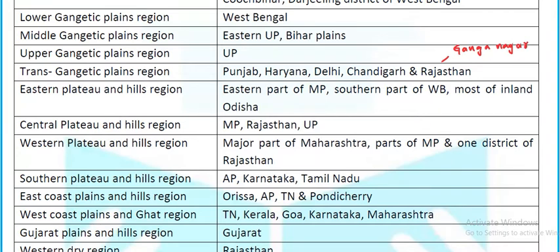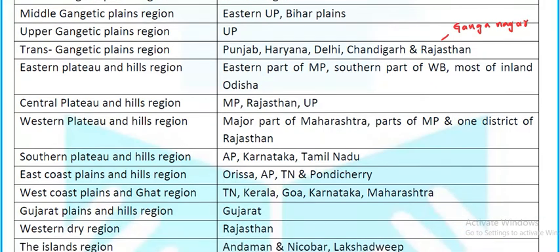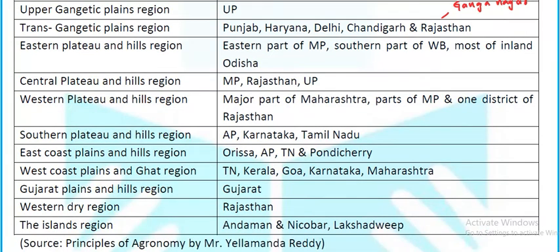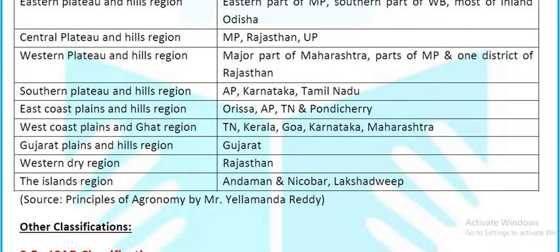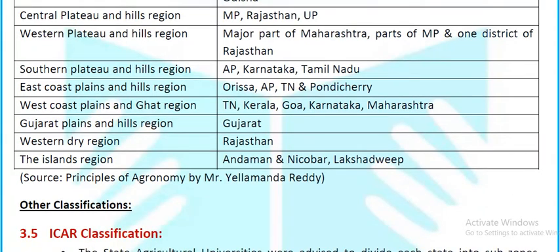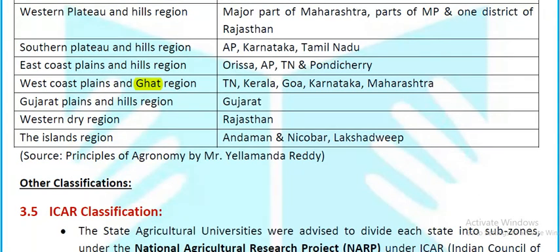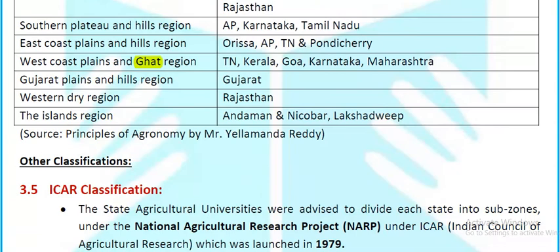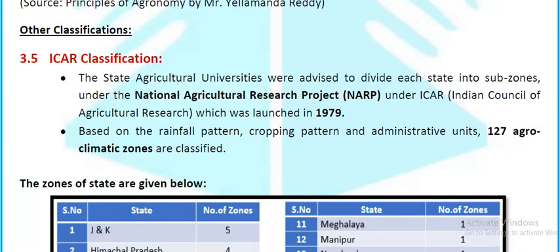The Eastern Plateau and Hill Region covers southeastern Madhya Pradesh, southern West Bengal, and most of Odisha. Central Plateau and Hills — Madhya Pradesh, Rajasthan, and UP. Western Plateau and Hills — major part of Maharashtra, parts of Madhya Pradesh and Rajasthan. Southern Plateau — Karnataka, Andhra Pradesh, and Tamil Nadu. East Coastal Plains — Odisha, AP, Tamil Nadu, Pondicherry. West Coastal and Ghat Region — Tamil Nadu, Kerala, Goa, Karnataka, Maharashtra. Gujarat Plains and Hills, Western Dry Region (remaining Rajasthan), and Island Regions — Andaman & Nicobar and Lakshadweep.